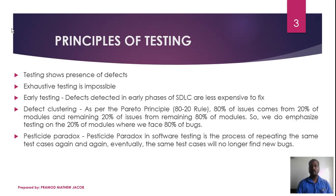The next principle is that exhaustive testing is impossible — it is impossible to test every possible error. No software is 100% bug free. There is always a probability of having an error.